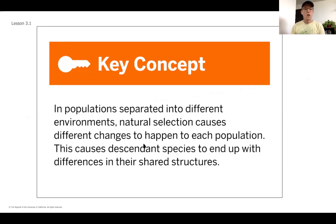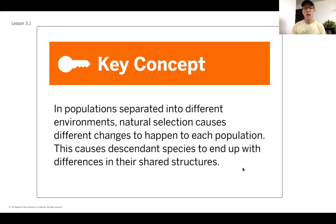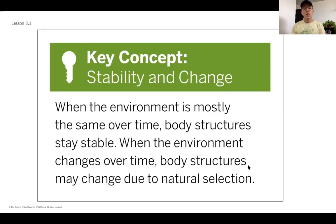We started to talk about how whales, wolves, and the mystery fossil became so different even though they are related. The main reason is that populations tend to get separated into different environments. Natural selection causes different changes to a population over time, so each of those two populations in different environments end up with differences in their shared structures. You can think back to our readings on the Galapagos tortoise and the polar bear.